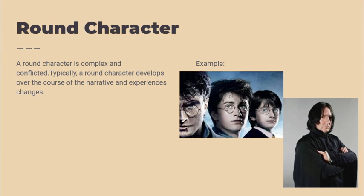Harry is a round character because from the beginning of the series to the end, we see how complex and conflicted he is. He didn't know he was a wizard, then found out he was. Throughout his time at Hogwarts, he learns more about himself and his past — why his parents were murdered, why he can speak to snakes, and how he must be the one to defeat Lord Voldemort. Professor Snape is also a round character. From the beginning, we learn he doesn't like Harry, but by the end we learn he constantly tries to save Harry because of his love for Harry's mother. Snape is very complex and conflicted, and his motivations stem from a past that is hard to understand.